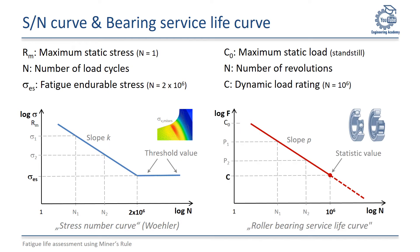The bearing service life curve looks very similar. Here too, we get a linear correlation between the existing bearing load F and the number of possible bearing revolutions N until a fatigue damage occurs when both axes are plotted logarithmically. The dynamic load rating C is defined to describe the dynamically bearable bearing load and can be found in roller bearing catalogues. In contrast to the fatigue-strength amplitude, the dynamic load rating C is not a threshold value, because the service life curve continues at higher revolutions as shown by a dashed line. C is a statistical value established to describe the curve at large numbers of revolutions. The slope of the curves depends on the material, stress type, and bearing type.